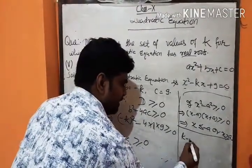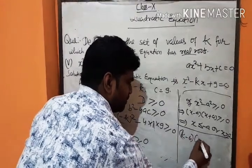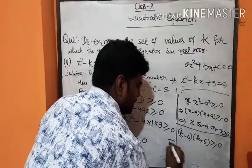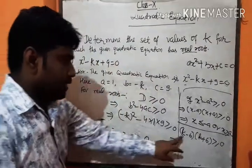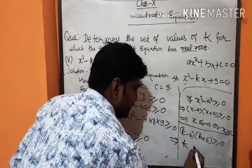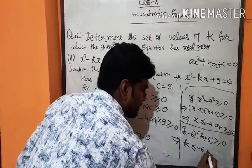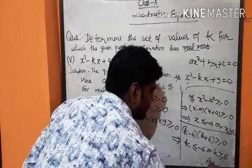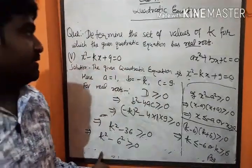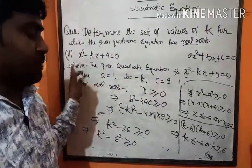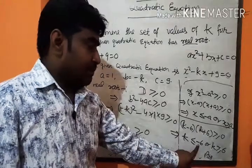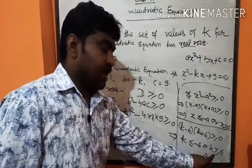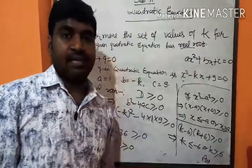So here we have k squared minus 6 squared greater than or equal to 0, giving us k minus 6 into k plus 6 greater than or equal to 0. This implies the value of k is less than or equal to minus 6, or k is greater than or equal to 6. Hence, for real roots, the value of k is minus 6 or less than minus 6, or 6 or more than 6. Thank you.